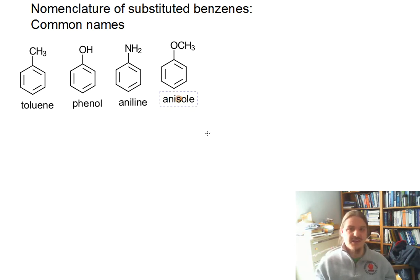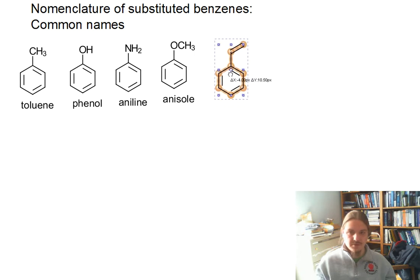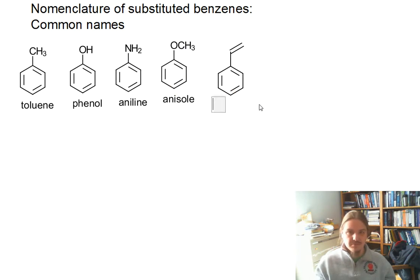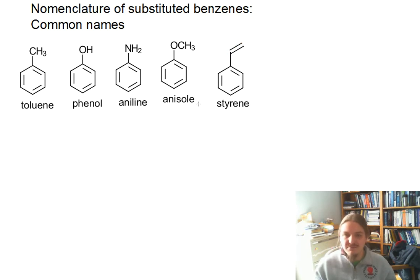Anisole is named as such because it has sort of an anise-y smell. This alkene is called styrene. So if you've heard of polystyrene, it's made out of this compound right here.